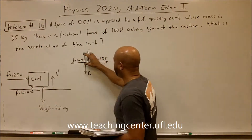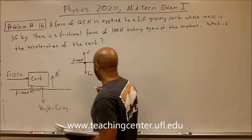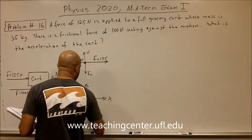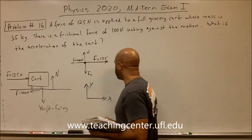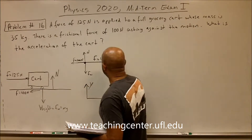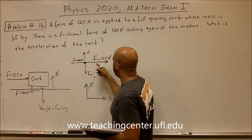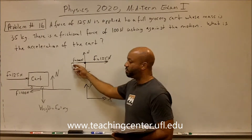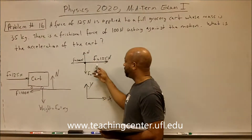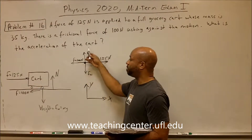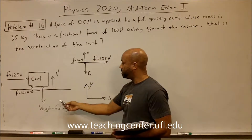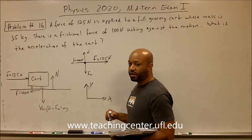We draw our free body diagram. Assuming the positive x direction is to the right and the positive y direction is upward, we have a positive applied force acting in the positive x direction, a negative frictional force acting in the negative x direction, a positive normal force acting in the vertical direction, and a negative weight force acting in the negative y direction.